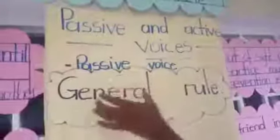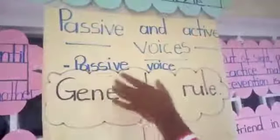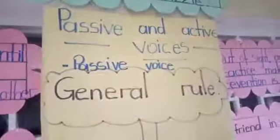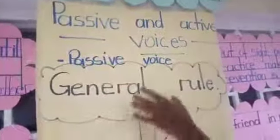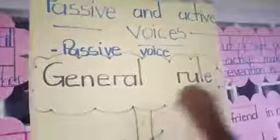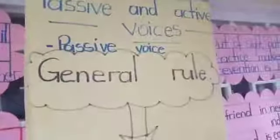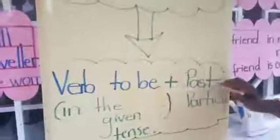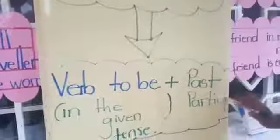We talked about present continuous tense — how to change from active to passive. The general rule for passive voice is: we use verb to be, then we add the past participle of the given verb.